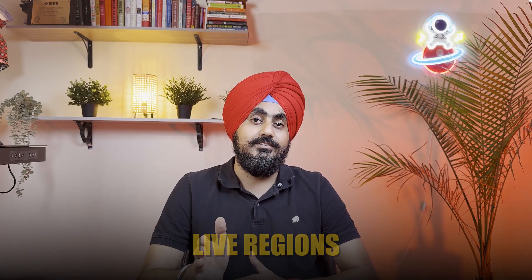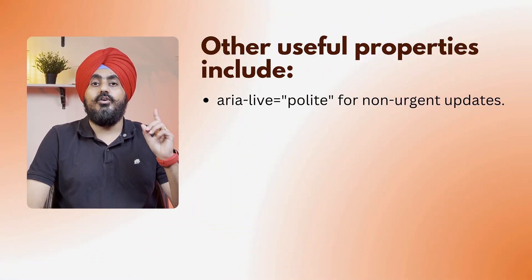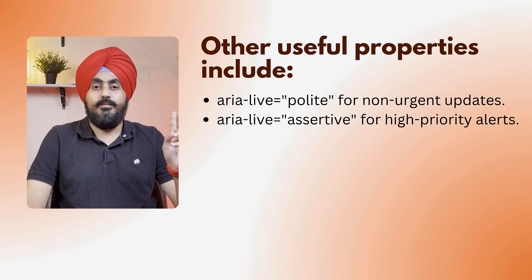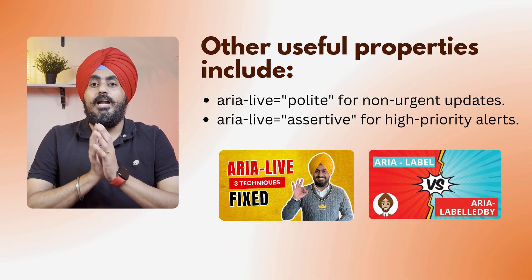Next is what most developers struggle with: ARIA live regions. They let the screen reader know when something dynamically changes or updates — no focus needed, no user interaction needed, it just gets announced. When you use a div with aria-live='polite', it announces dynamic changes even if the user's focus is somewhere else. You can use aria-live='polite' for non-urgent updates or aria-live='assertive' for high-priority alerts. I have two videos explaining both aria-live and role='alert' in detail — link is in the description below.